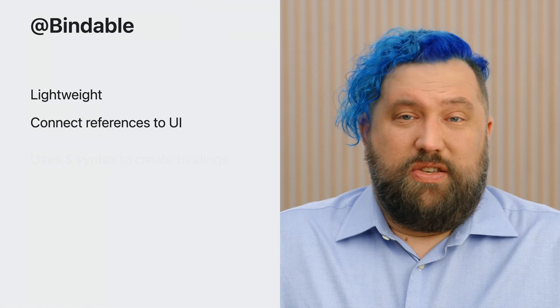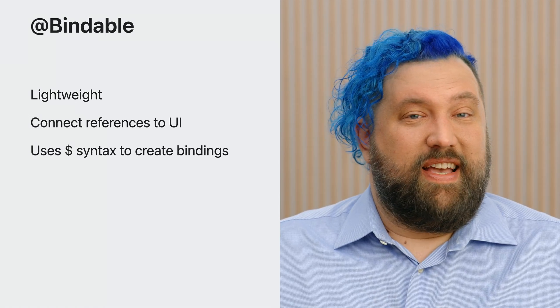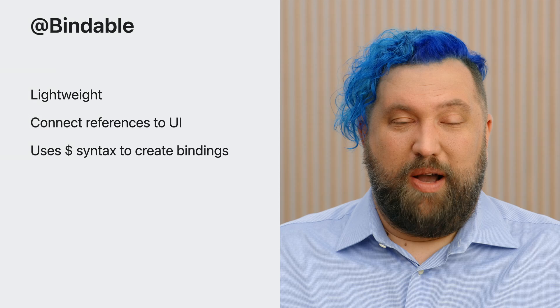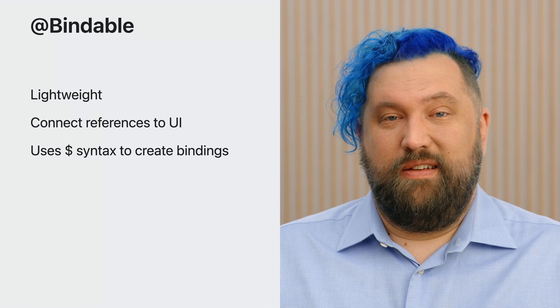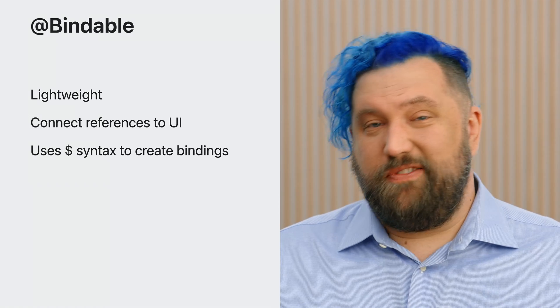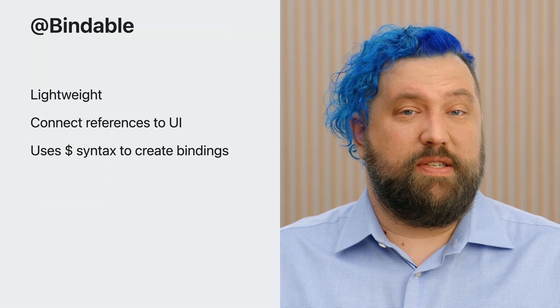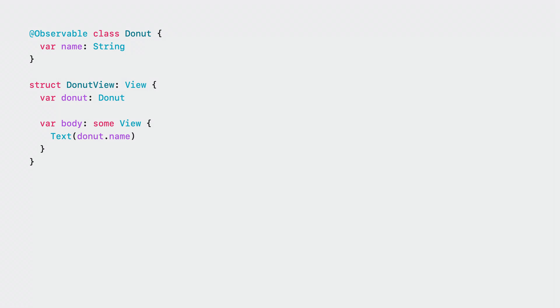Getting a binding out of a @Bindable wrapped property is really easy — just use the $ syntax to get the binding to that property. Most often, this will be bindings to Observable types. For the Donut view, we have the name being displayed with Text.